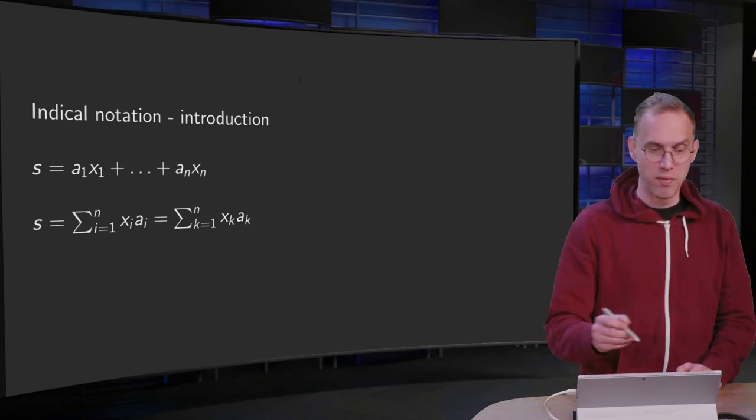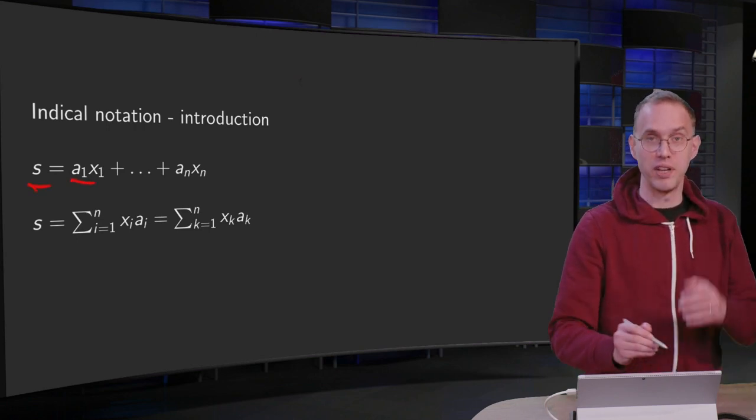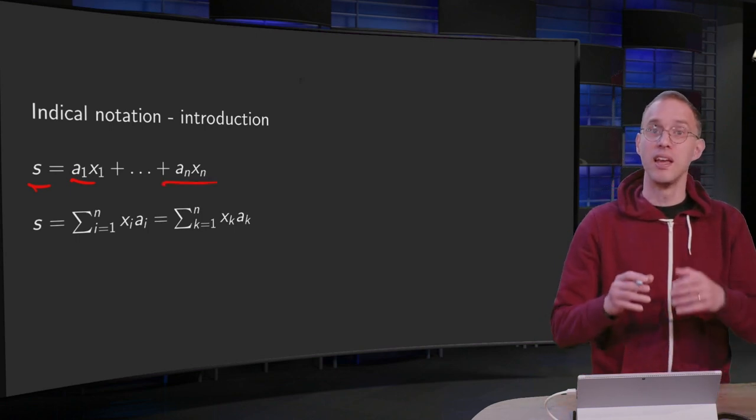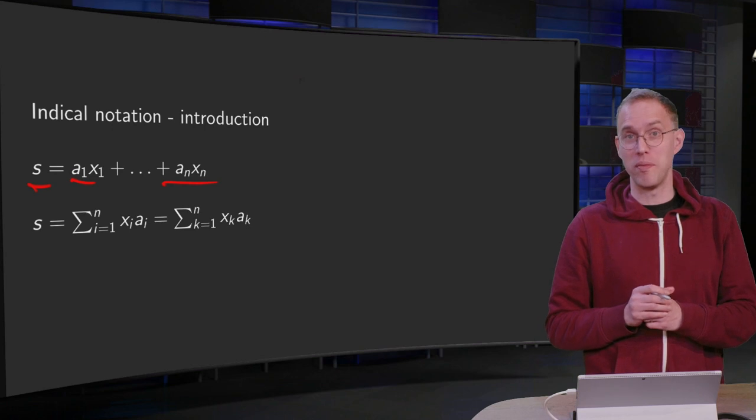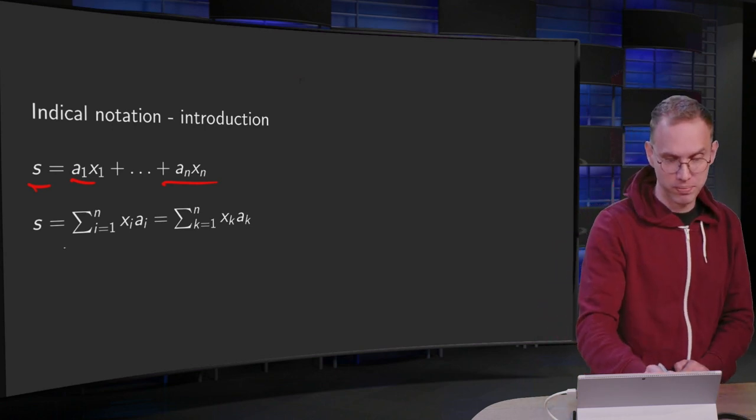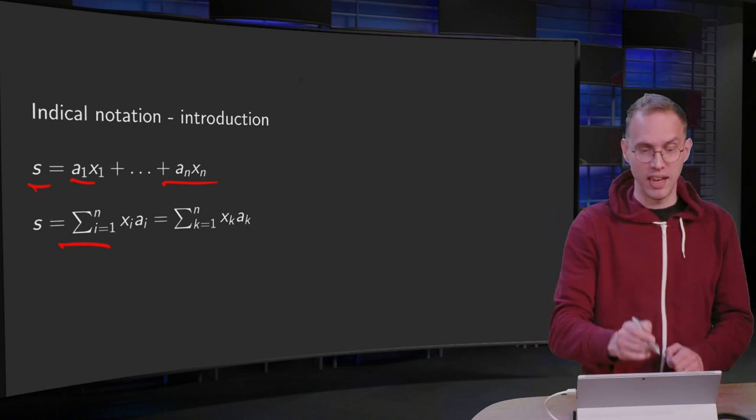So what's the idea? We often have to write sums like s equals a₁x₁ plus a₂x₂ plus a₃x₃ up to aₙxₙ. Now we have already come up with a notation to write it a bit shorter using the sigma. So s equals sigma i equals 1 to n, xᵢaᵢ.